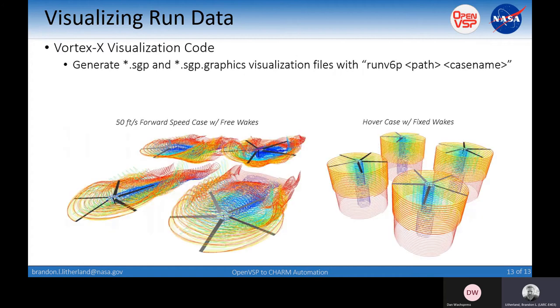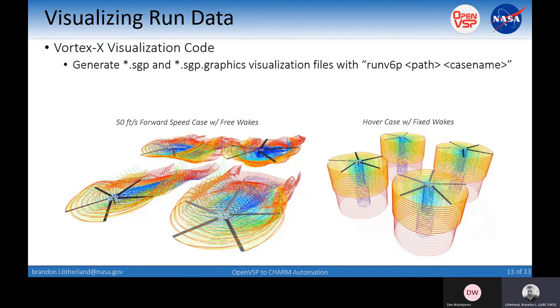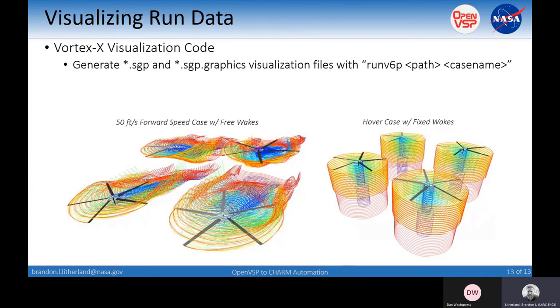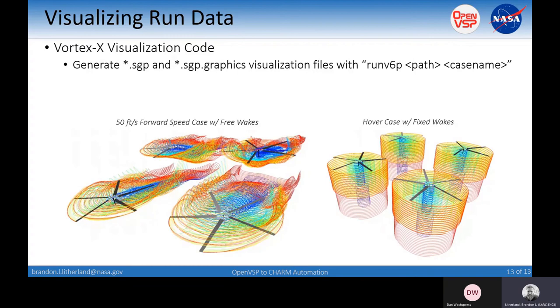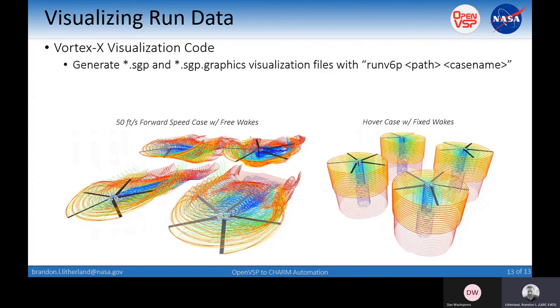For visualizing the data, you can run the run V6P with a path in your case name. It's going to take those output files and create these SGP format in the graphics cases that you can visualize in VortexX.